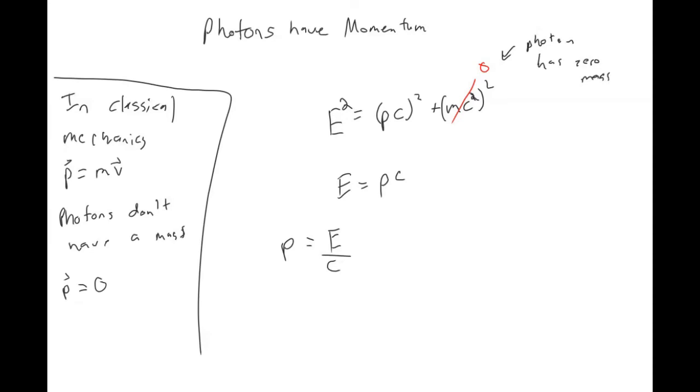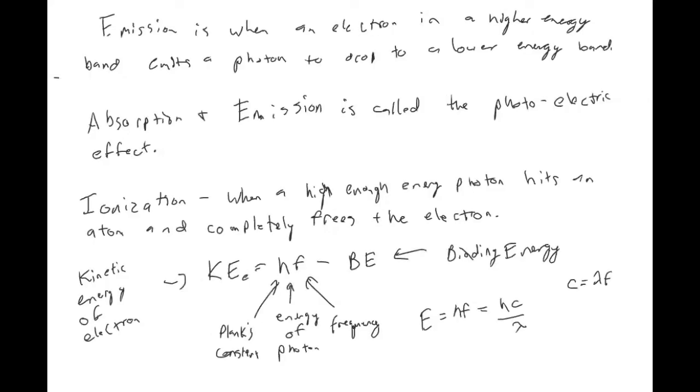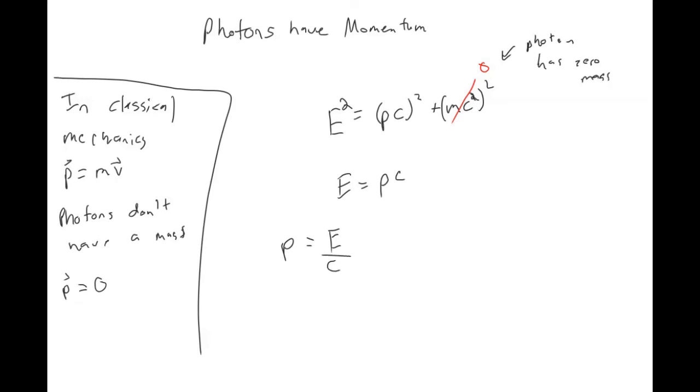If we were to solve this for p, we would get E over c. And if we use the relationship that we wrote down on the previous slide, that energy equals h c over lambda, then we see that the momentum for a photon is h over lambda.